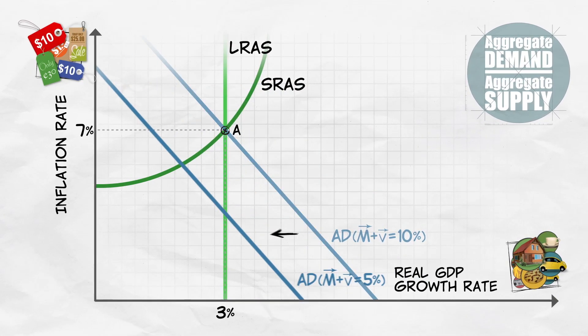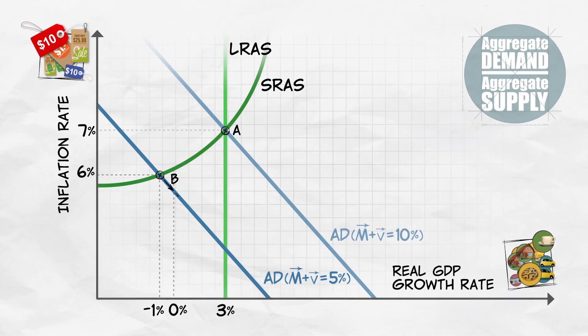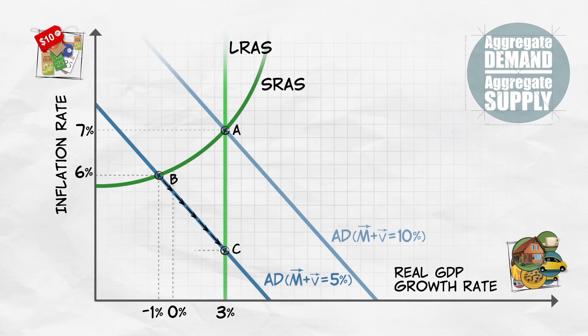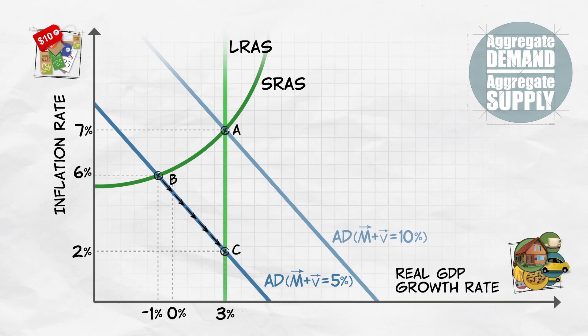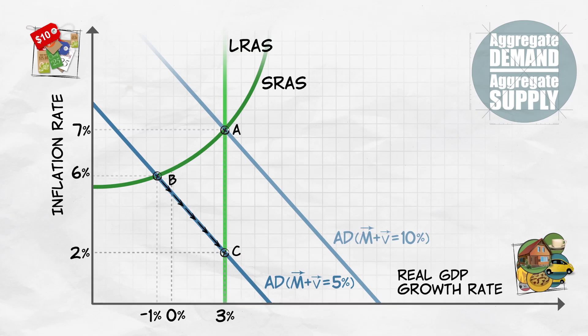The AD curve shifts to the left. Now notice that without an intervention, real GDP growth is going to decrease and the economy will move to point B. Now in the long run, when fear recedes, we'll return to our steady state growth level, but not without some sluggish growth and increased unemployment, or even a recession in the short run.